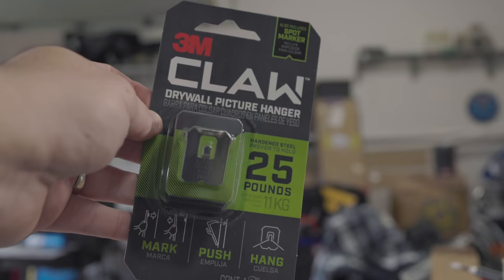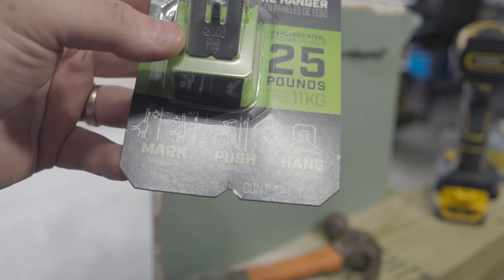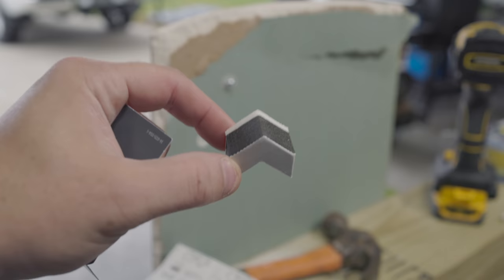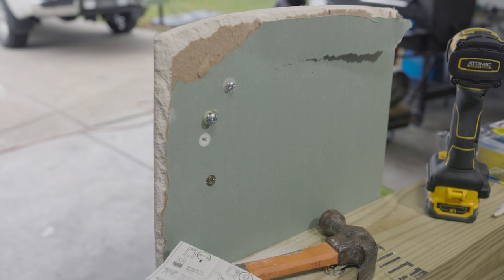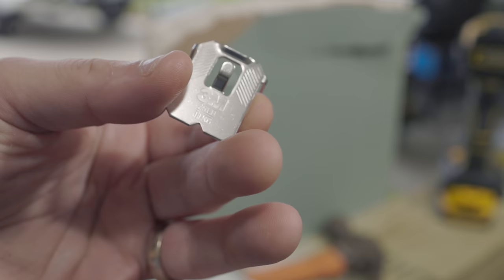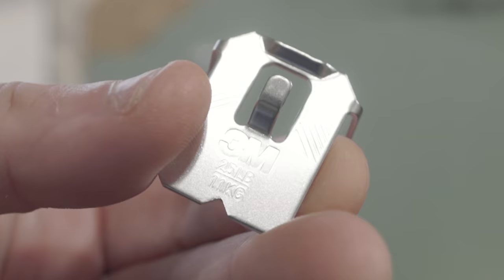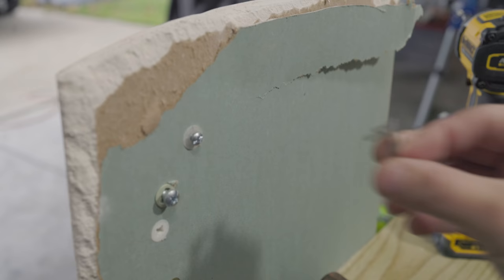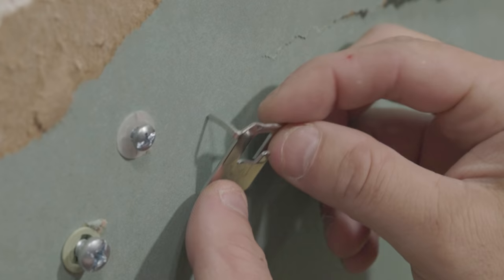So this is the 3M Claw. Mark, push, hang. They give you a temporary spot marker. Now you can also buy these in different sizes and different holding capacities. This one here is 25 pounds. Now this is the most expensive out of all of them. I think this one ran me six bucks, but the bigger one's running around 10, 15.